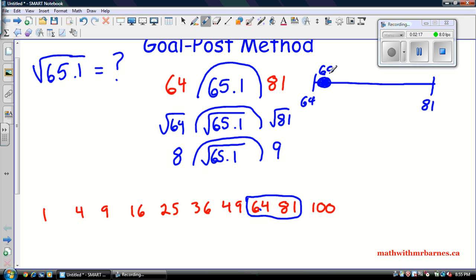So what that tells me is that if I take the square root of 64, it's 8, and the square root of 81 is 9, so that must mean that the square root of 65.1 is really close to 8, but it's not quite 8. So this is where we have to make an estimate.